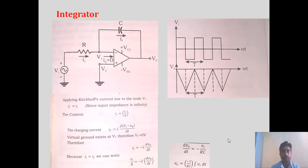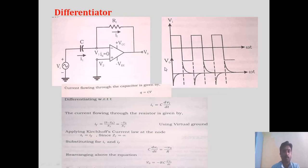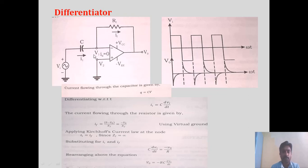In a similar way we can go for the differentiator. The output of this circuit is the differentiation of the input. At the place of resistance in the integrator, we are going to place a capacitor, and the feedback path will be provided with resistance RF. This circuit will be a differentiator circuit.